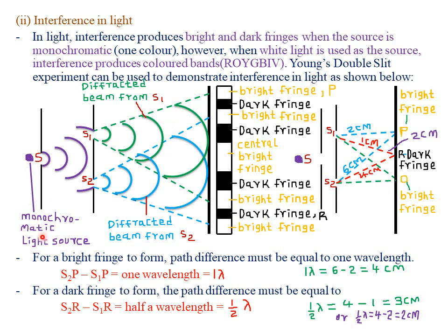We have our source of monochromatic light, so we expect formation of bright and dark fringes. The source S1 produces monochromatic light of a specific color — in this case, purple. Once this light is diffracted through the first slit and gets to the second slit, that is S1 and S2, it is also diffracted a second time. The waveforms in green represent light diffracted by slit S1, and the waveforms in blue represent light diffracted through slit S2.